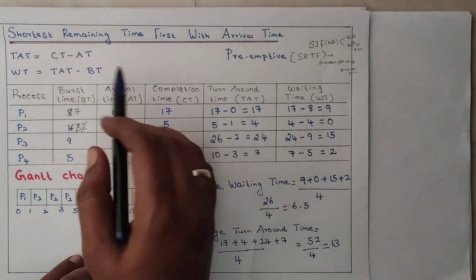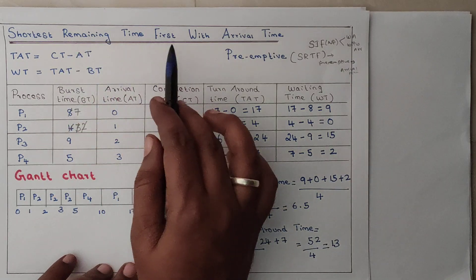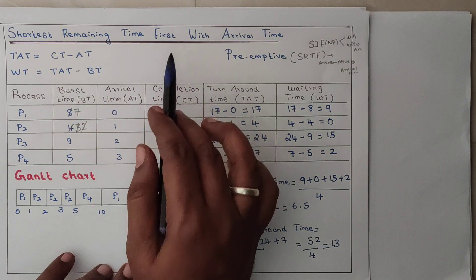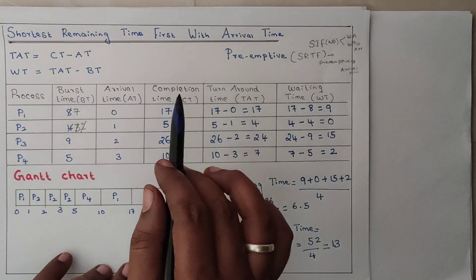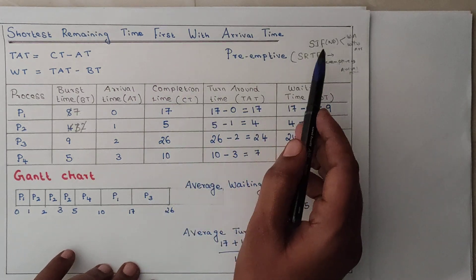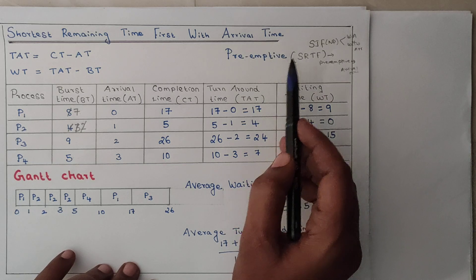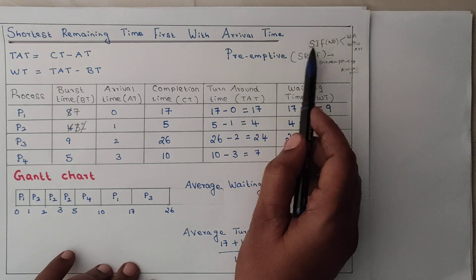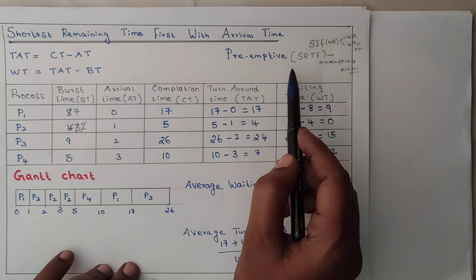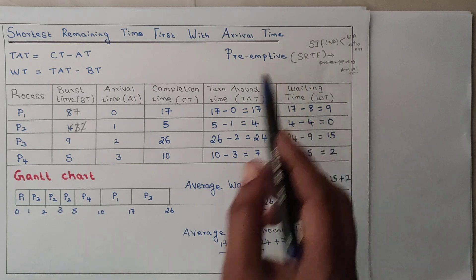This is the way you calculate Shortest Remaining Time First. Shortest job scheduling can be done in two ways: preemptive and non-preemptive. If non-preemptive, the name is SJF; if preemptive, the name is SRTF. Thank you.